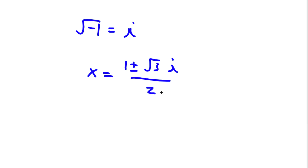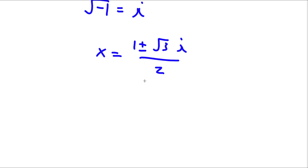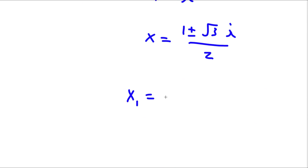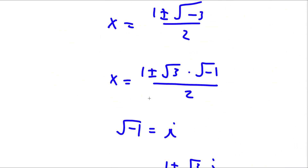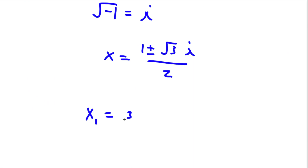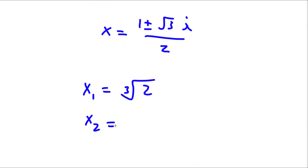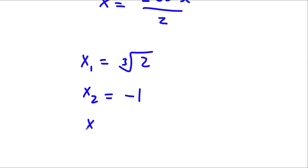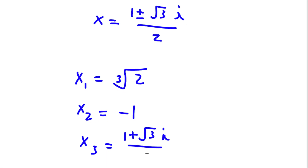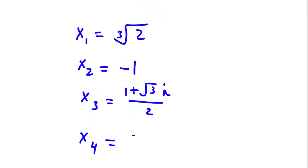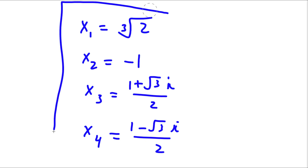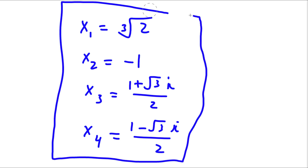And these are going to be our two other solutions. So my four solutions are: x is equal to the cube root of 2, x is equal to negative 1, x is equal to 1 plus the square root of 3 times i over 2, and x is equal to 1 minus the square root of 3 times i over 2. So these are our four solutions to this equation.